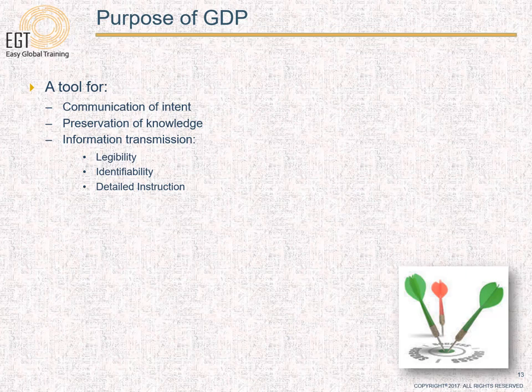As indicated in ISO 9000:2005, GDP enables communication of intent to disseminate and preserve the organization's experiences in order to share knowledge. The main objective of GDP is to use it as a tool for communication of intent, preservation of knowledge, and information transmission to provide evidence of conformity — evidence that what was planned has actually been done. GDP ensures that documents are legible and identifiable, and ensures there is an adequate record of all activities.